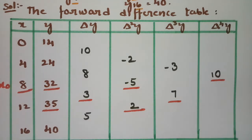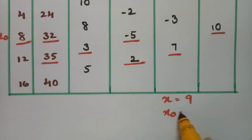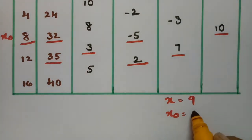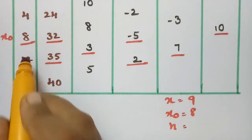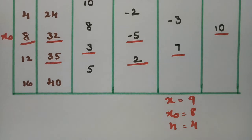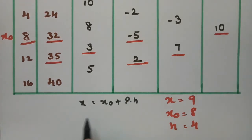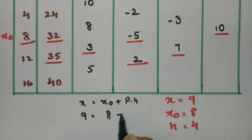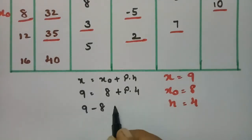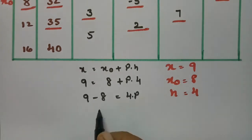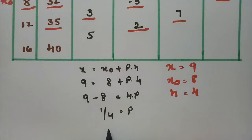Now we calculate p. Our x value is 9, x₀ is 8, and h equals 4 (the step size). Using x = x₀ + p·h: 9 = 8 + 4p, so 1 = 4p, therefore p = 1/4 = 0.25.